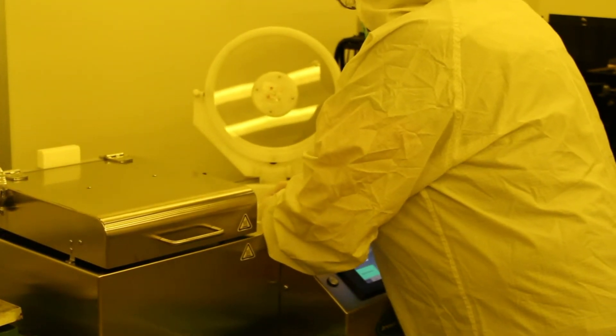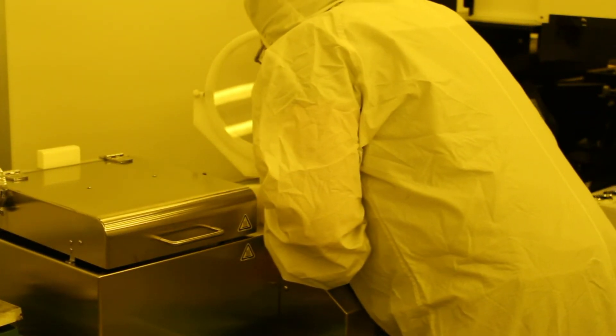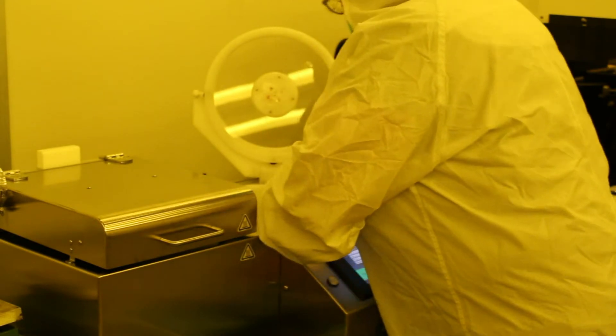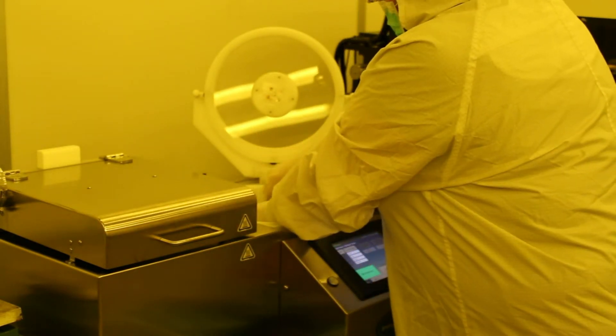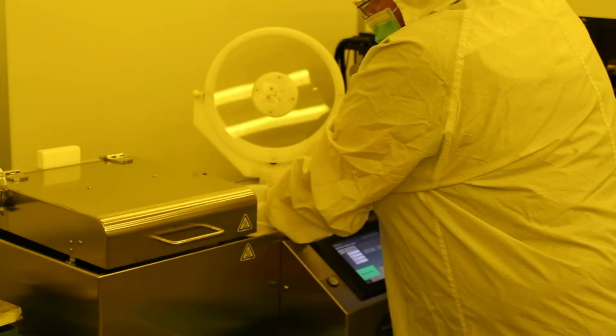In order to make sure that we have a good adhesion between the resist and the substrate, we also need to use a primer. The primer is called HMDS or hexamethyl desilazane.